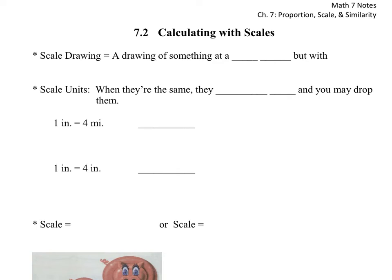So the next step in progression from 7.1 is now we're going to do some calculating stuff with scales. We're going to look at scale drawings. It's kind of like the maps that we were using in the last section, that a map is a scale drawing of a section of the Earth's surface. So it's a drawing of something at a new size, those are the first two blanks, new size, but with correct proportions.